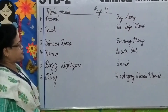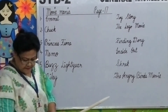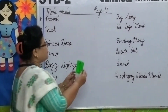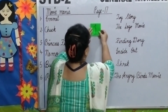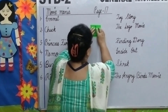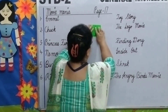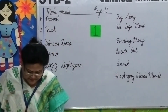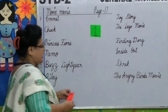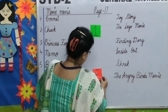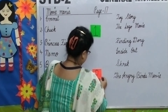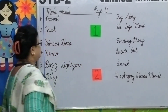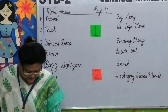Now let us match them. Emmet — Emmet is from The Lego Movie, so I will put number one here. Next, Chuck — The Angry Birds Movie, number two. Princess Fiona — Shrek.